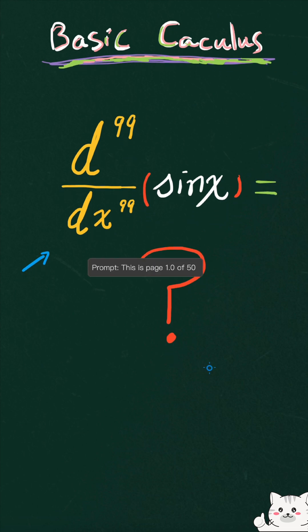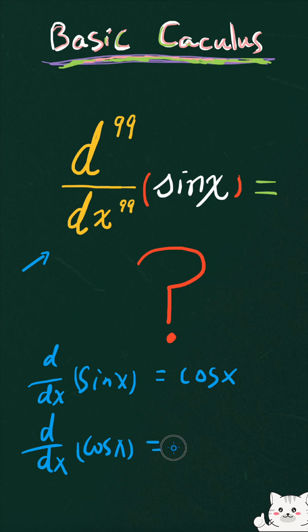Before we solve this problem, there are some fundamentals that we have to go through. The formulas for finding the derivatives of trigonometric functions: the derivative of sine x is cosine x, and the derivative of cosine x is negative sine x.